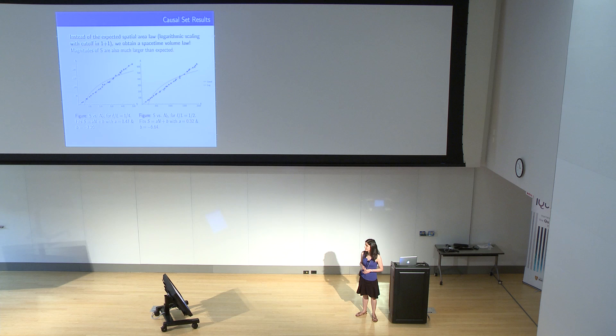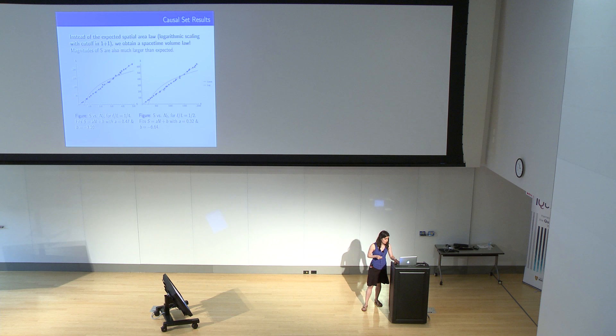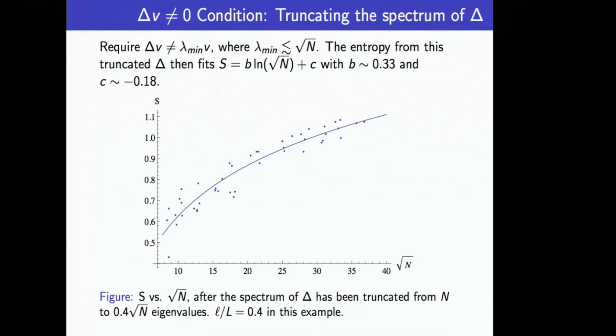We tried changing many things in the setup to try and understand this result. For example, we looked at the massive case in case this is an artifact of the massless theory, we looked at 3+1 dimensions, we looked at regular lattices, non-local two-point functions, all kinds of things, but this result of linear scaling with the number of elements kept persisting. This is a spacetime volume law because the volume grows with n and the entropy is growing linearly with n. The difference between the left and right figures are just different ratios of the sizes of the two diamonds. On the left the ratio was a quarter, and on the right the ratio is one half.